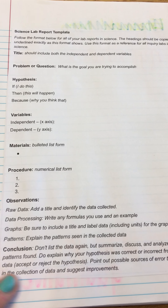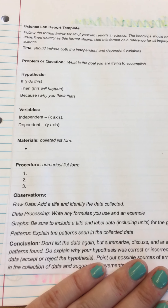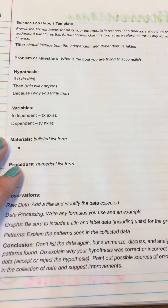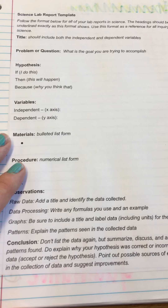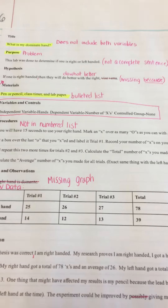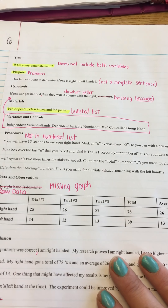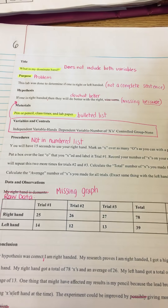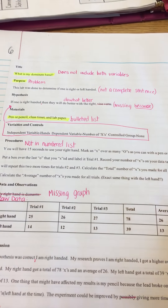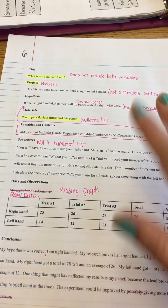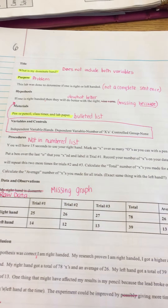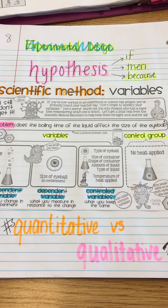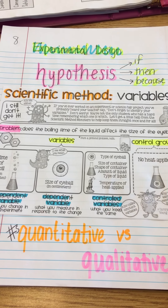Pages six and seven are about formal lab reports — this is how your formal lab reports will be set up. We will do some of them in our notebooks and some of them you will type out. On page six you should have glued a poorly written formal lab, and we will be analyzing that and correcting it and fixing mistakes.